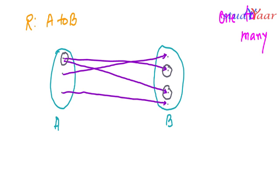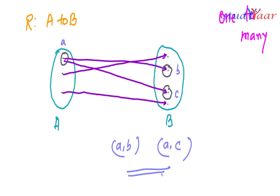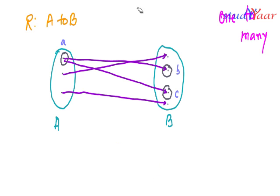Now if I have this as A, this as B, and this as C, then in my relation I have (A, B) and I have (A, C). As per my definition of a function, this should never happen. Therefore this type of a relation is not a function.